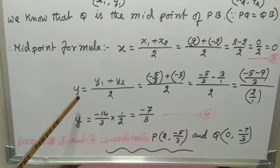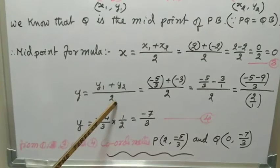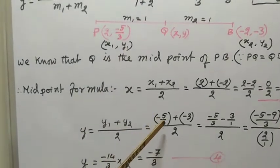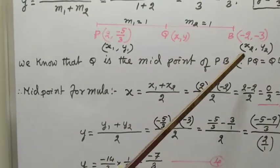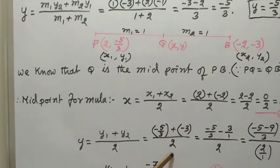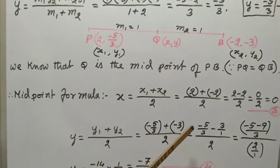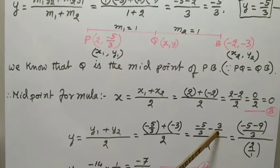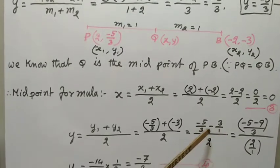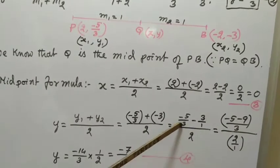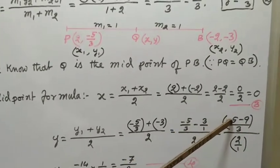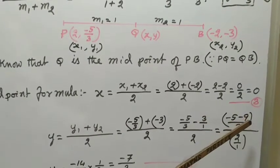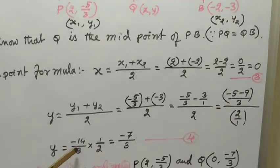Now use the midpoint formula for Y: Y equal to (Y1 + Y2) divided by 2. Y1 is -5/3 and Y2 is -3. We can write 3 as 3 divided by 1. Take LCM for denominators 3 and 1, which is 3. So 3 divided by 3 gives quotient 1; 1 into -5 is -5. Again 3 divided by 1 is 3; 3 into 3 gives -9. Therefore sum equals -14 divided by 3.